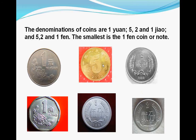The coin denominations of Chinese money usually are 1 yuan, 5 jiao, 2 jiao, and 1 jiao, and also 5 fen, 2 fen, and 1 fen. The smallest is the 1 fen coin of the Chinese money.